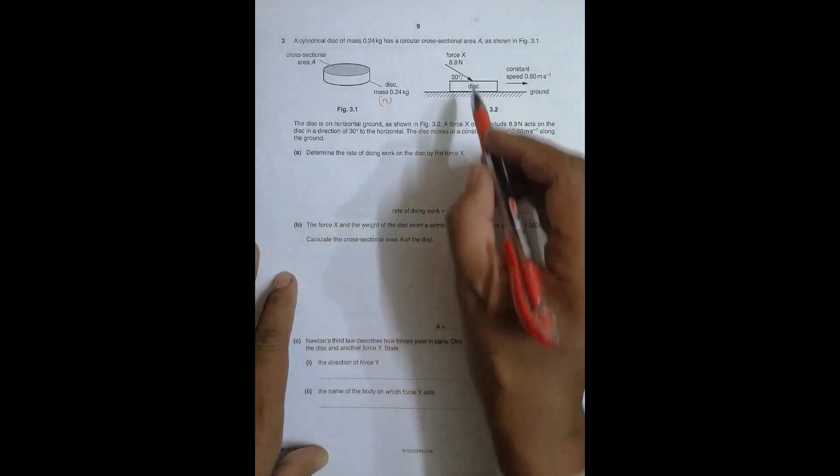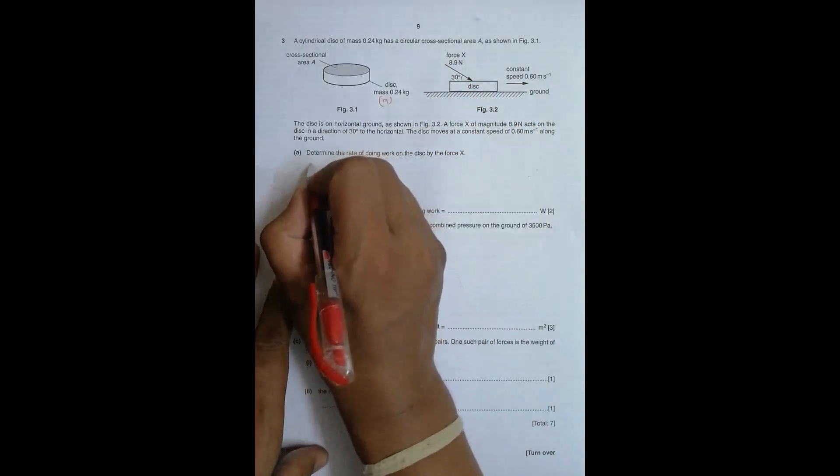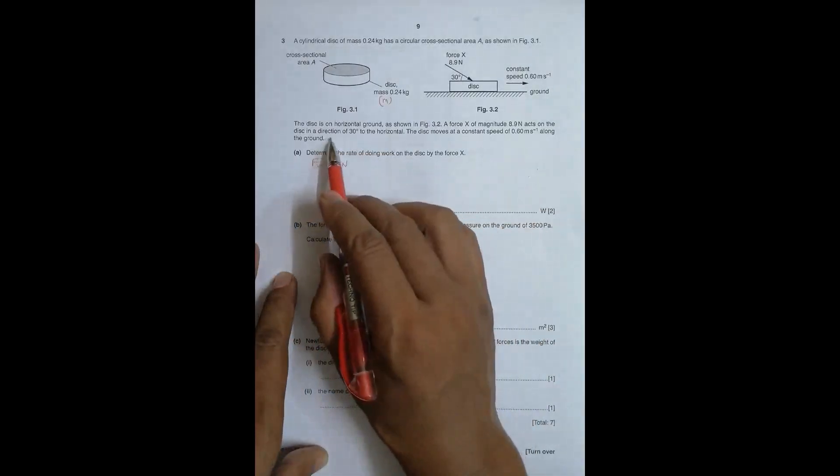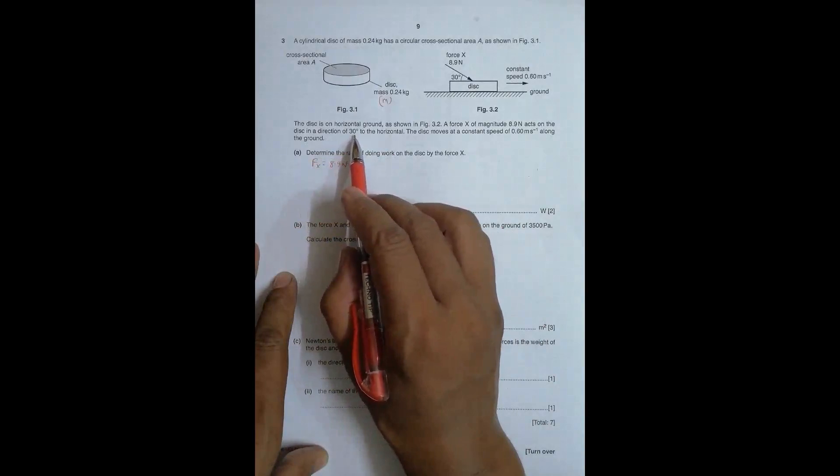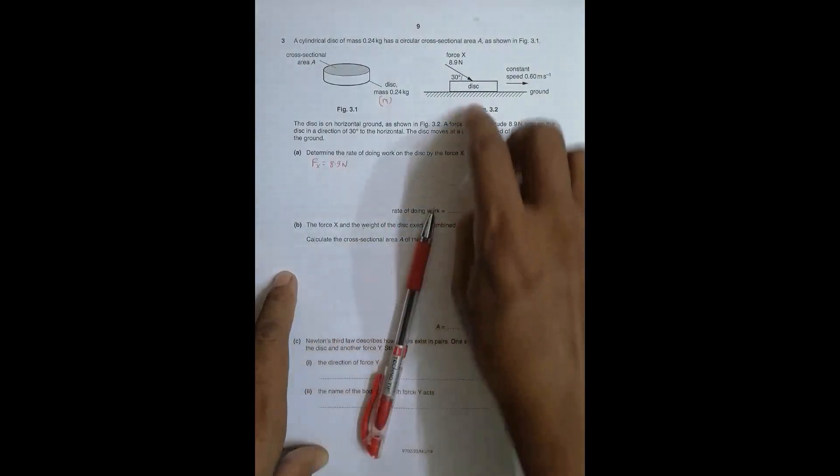A force X of magnitude 8.9 Newton acts on the disk in a direction at 90 degrees to the horizontal. The disk moves at a constant speed of 0.60 m/s on the ground.